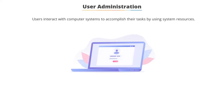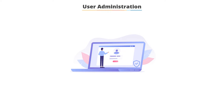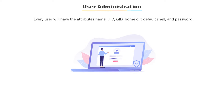In any computer system, users interact with the system to accomplish their tasks by using the available resources. To accomplish these tasks, you need a user account to log into the system with the respective credentials. Every user who sets up an account has a valid name and password for authentication, followed by the user identity number assigned by the system, and for more than one person, we have the group identity number for authorization.